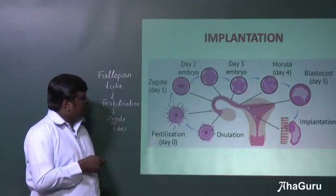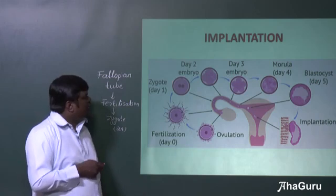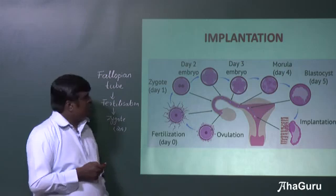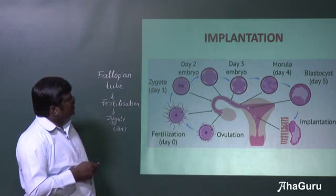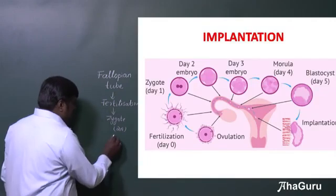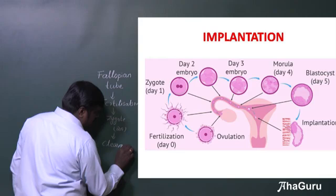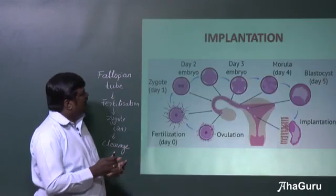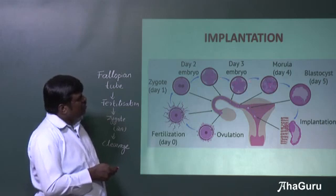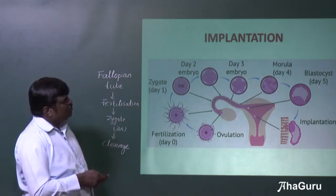After fertilization, on the first day itself it develops into a zygote, where the nuclei becomes diploid — that is the 2N condition. Then the cell starts dividing immediately after fertilization; that process is called cleavage. The zygote undergoes cleavage, becoming a 2-cell stage, then 4-cell, then 8-cell, and finally a ball of cells called the morula. Later they form a blastocyst.